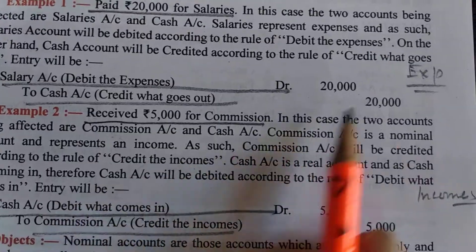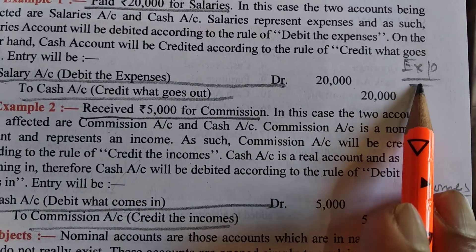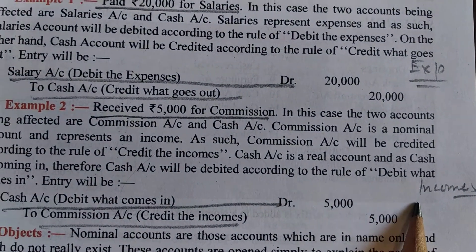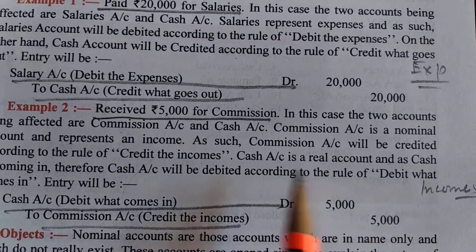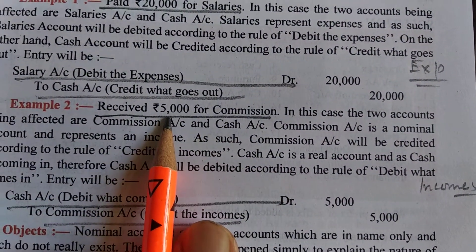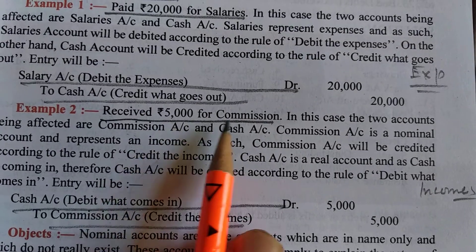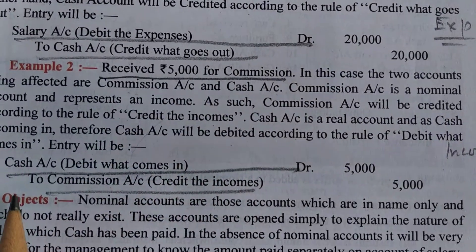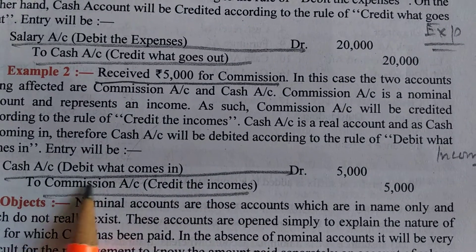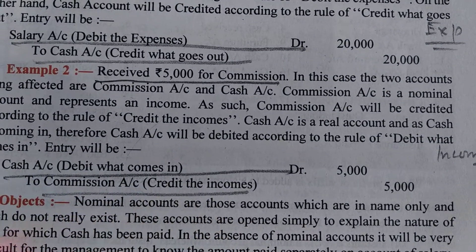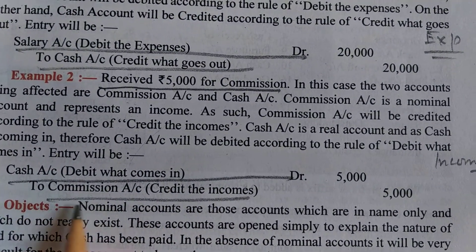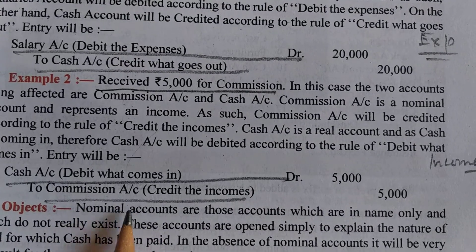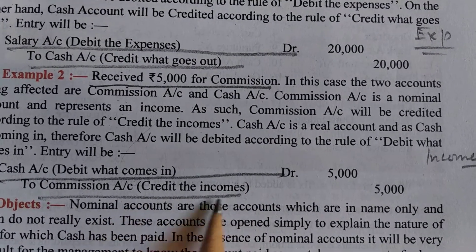That was the example for expenses. Now I give you the example for income. Suppose commission received — commission is received in the form of cash. So what we write: cash account debit — debit what comes in, cash is coming — to commission account. In the form of commission, as it is income, credit the incomes.